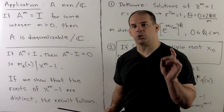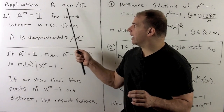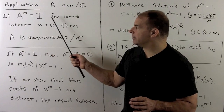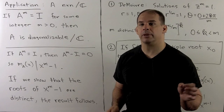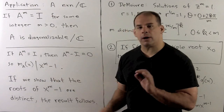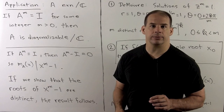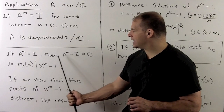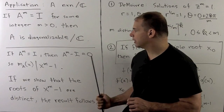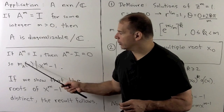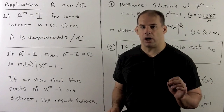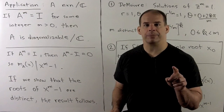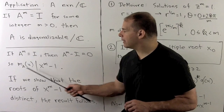Here's a nice application to group theory. Let A be an n-by-n matrix over the complex numbers satisfying A to the m equals the identity matrix for some positive integer m. Our result says A is automatically diagonalizable over C. Since A to the m equals I, we have A satisfying the polynomial x to the m minus one, so the minimal polynomial of A divides x to the m minus one. If x to the m minus one has distinct roots, so will the minimal polynomial of A, giving us the result.